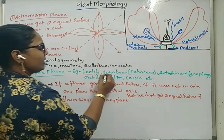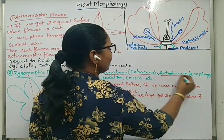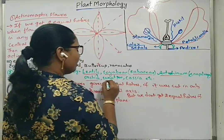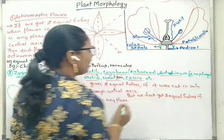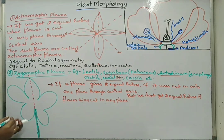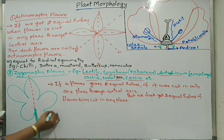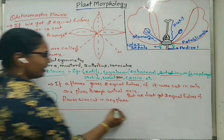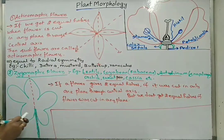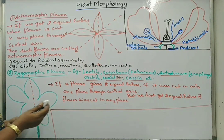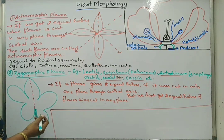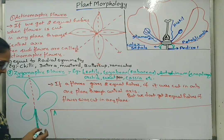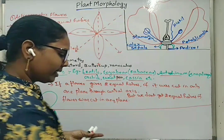Examples of zygomorphic flowers are lentils, soya bean (Fabaceae), antirrhinum (snapdragon), orchids, sweet pea, and cassia. The third type is asymmetrical flowers — some types of flowers do not give any equal half even when cut in any plane, so the flowers are very irregular.